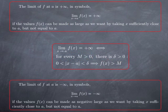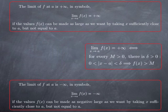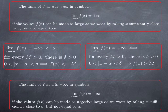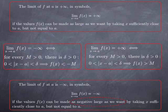Similarly, we can define the limit of f at a to be negative infinity if the values of f of x can be made as negative large as we want by taking x sufficiently close to a, but not equal to a. Formally, the limit is negative infinity at a if for every M, there is a delta such that when x is within delta of a but not equal to a, f of x is smaller than negative M. In other words, we can make f of x below any large negative number — as negative large as we want corresponds to making f of x below negative M for any positive M, no matter how large.